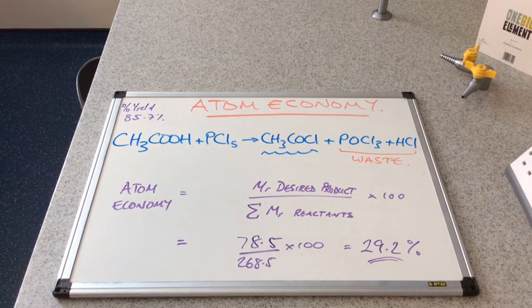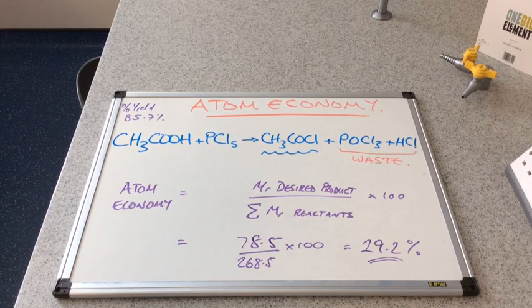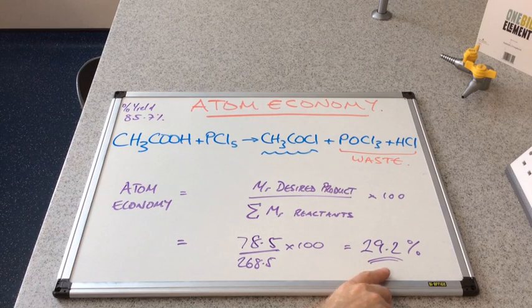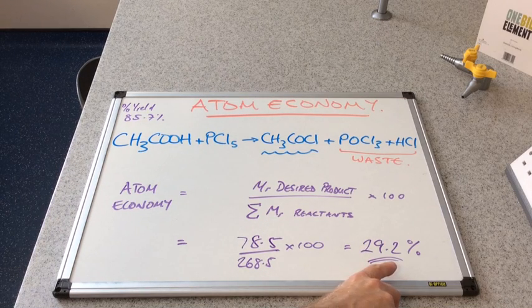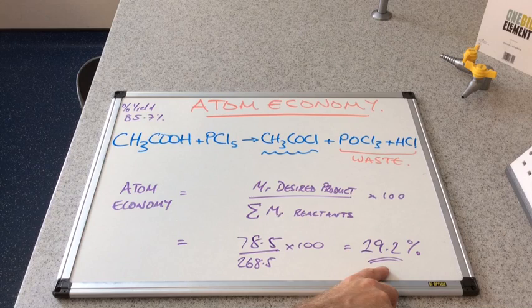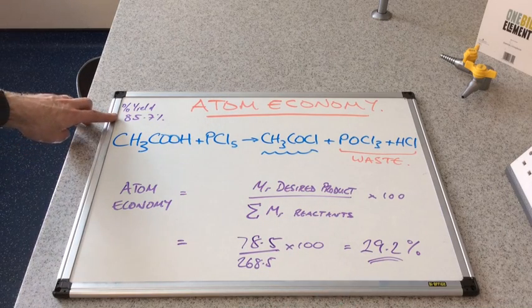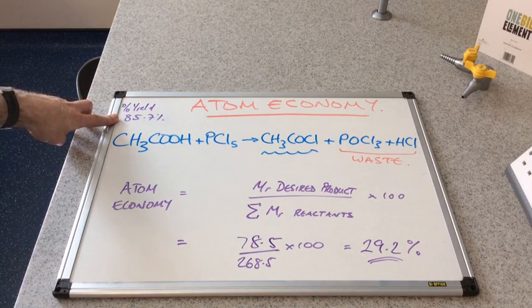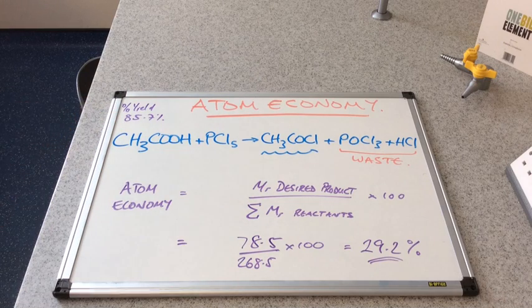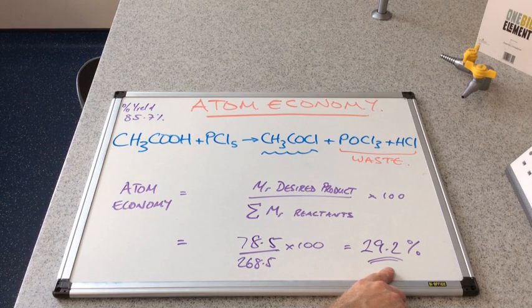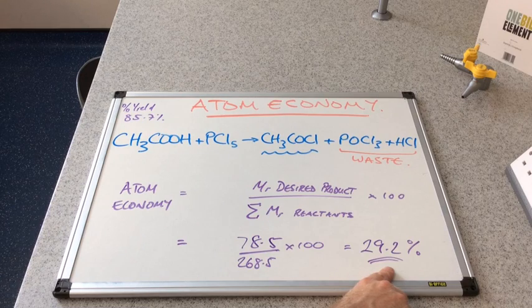And you can see there I've fed the numbers in to the formula, and we get a rather pathetic looking atom economy of 29.2%. So we started out with this amazing percentage yield of 85.7%, and rather disappointingly we're coming out with a 29.2% atom economy.